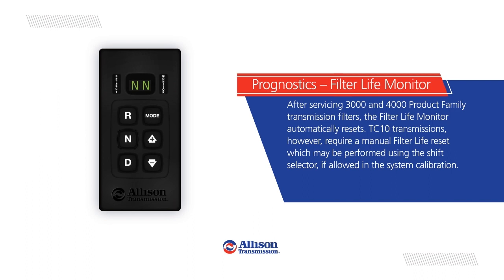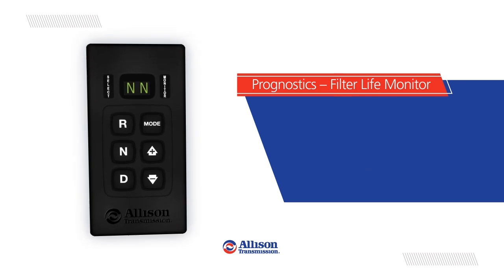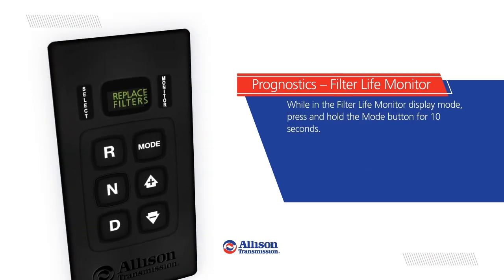After servicing 3,000 and 4,000 product family transmission filters, the filter life monitor automatically resets. TC-10 transmissions, however, require a manual filter life reset, which may be performed using the shift selector if allowed in the system calibration. While in the filter life monitor display mode, press and hold the mode button for 10 seconds.